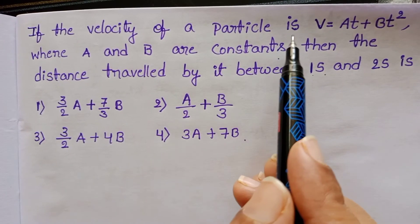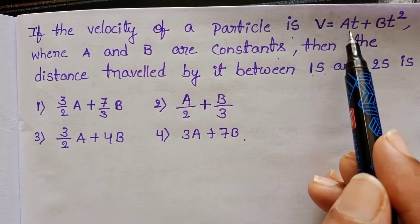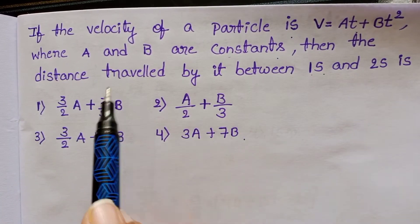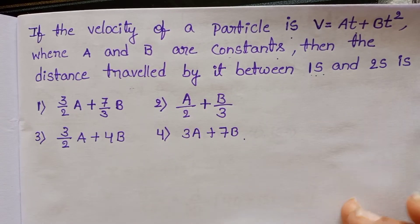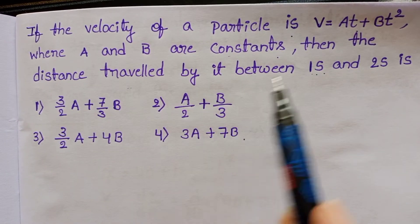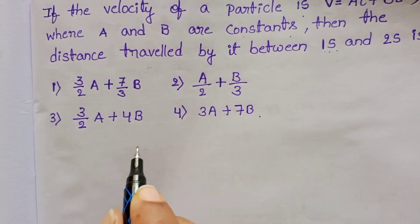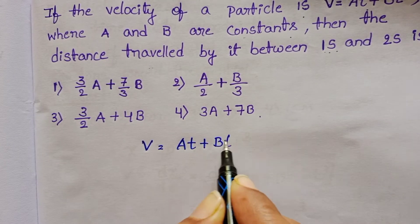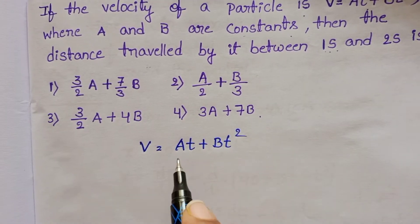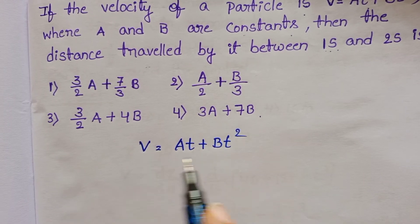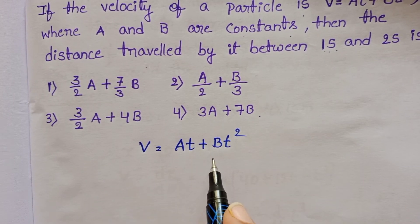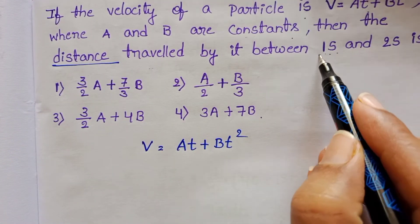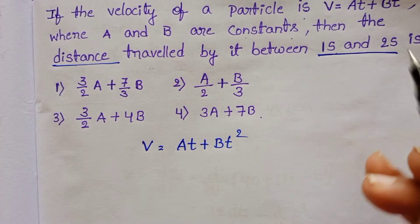If the velocity of a particle is v equals at plus bt squared, where a and b are constants, find the distance travelled between 1 second and 2 seconds. Velocity is given as a function of time, and we want to find the distance travelled by the particle between t = 1 second and t = 2 seconds.